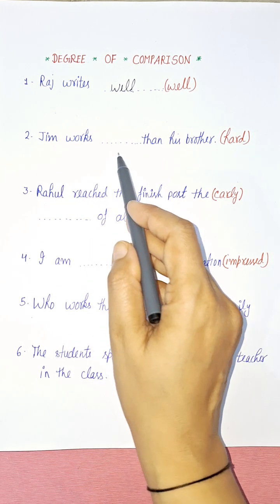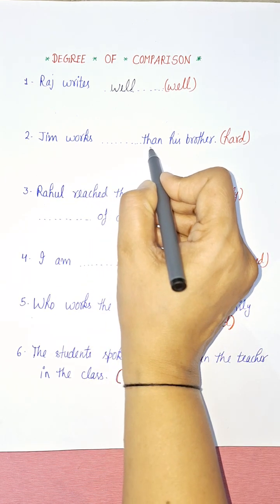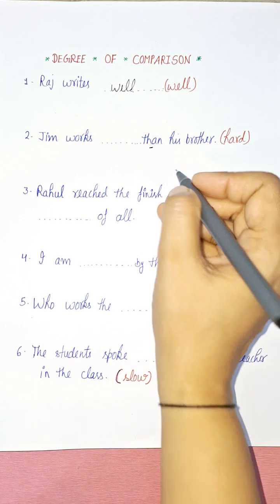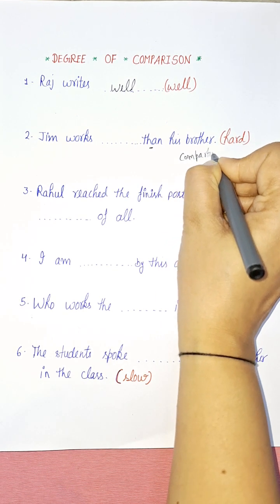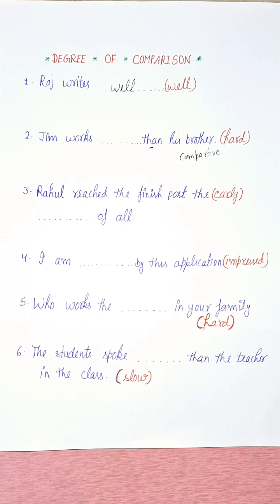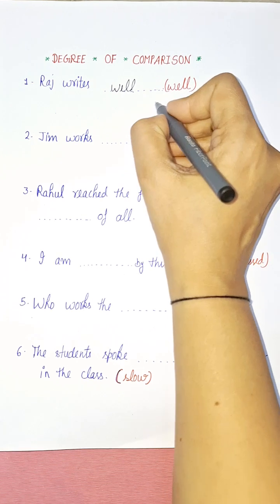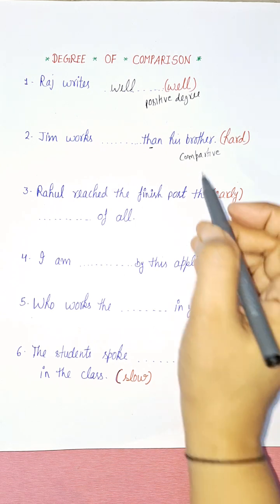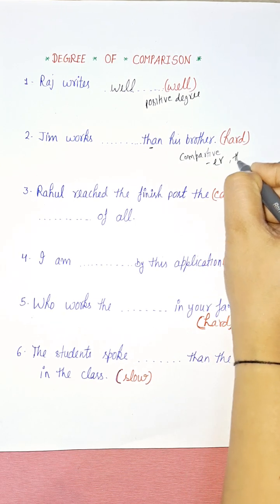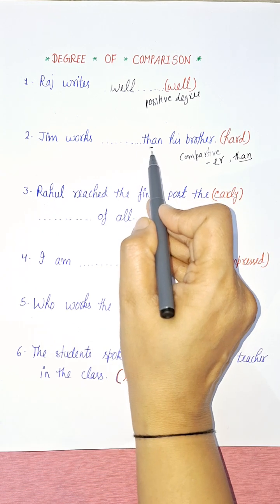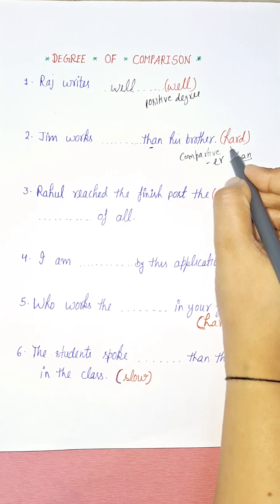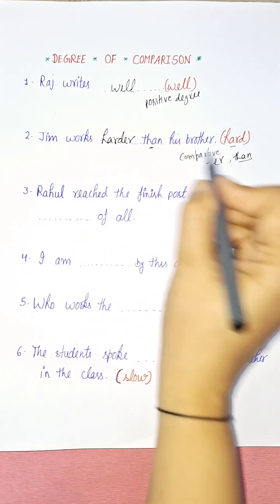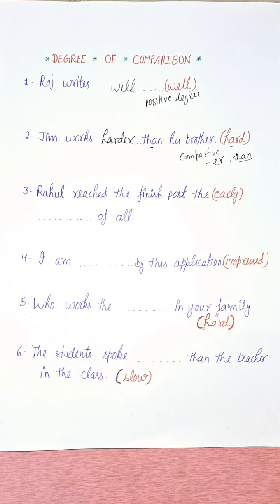Second sentence: 'Jim works ___ than his brother.' Your keyword here is 'than,' which tells you it is comparative degree. In comparative degree, you get the ER form. The adjective is 'hard,' so you write 'Jim works harder than his brother.'